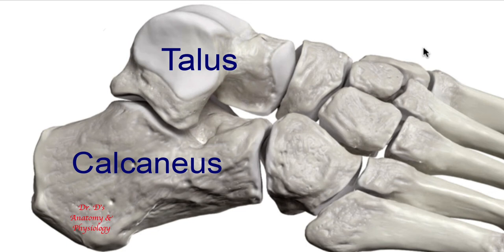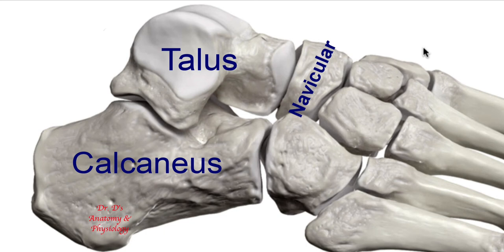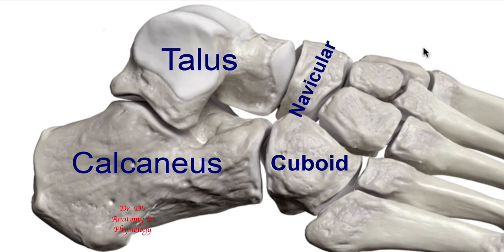The talus anteriorly articulates with the navicular bone. The word navicular comes from its resemblance to a little ship or boat — navis means boat and naviculus means little boat. In a moment we will see from a superior view this resemblance. The calcaneus articulates with the cuboid bone. This name implies that the bone is shaped like a cube. If this doesn't help you remember, note that the calcaneus begins with a C and articulates with the cuboid, which also begins with a C.